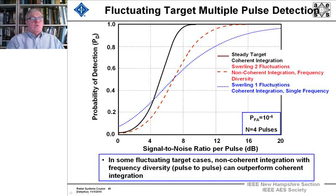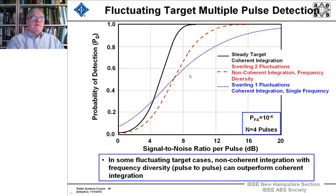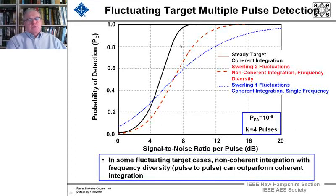And Swerling 1 fluctuations where we're coherently integrating at a single frequency. We see that in some fluctuating target cases, non-coherent integration with frequency diversity pulse-to-pulse can outperform coherent integration. But more often than not, coherent integration is used because it's going to be part of the Doppler processing and signal processing functions we'll use later on.